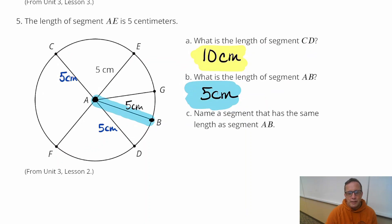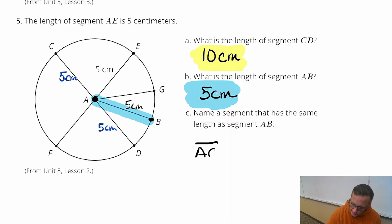Name a segment that has the same length as segment AB. Well, it's just basically saying just name a segment that is a radius. Let's name one that hasn't been named yet, like AG. So segment AG right here. That's a radius, so we can safely say that one works. So AG.